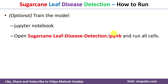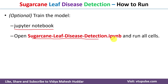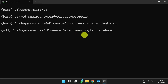If you want to use the pre-trained model, you can use it directly. Otherwise, if you want to train your own model, follow these optional steps: in the Anaconda prompt, type 'jupyter notebook', open the sugarcane leaf disease detection IPython notebook, and run all cells.